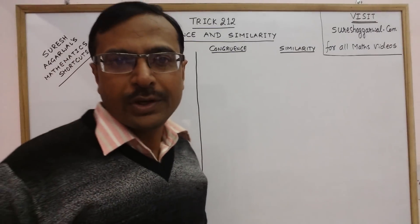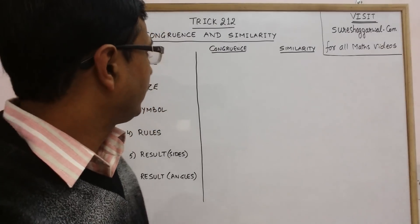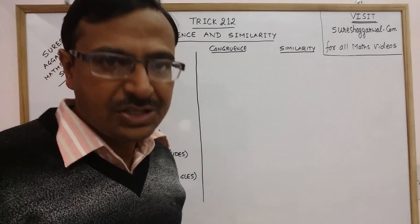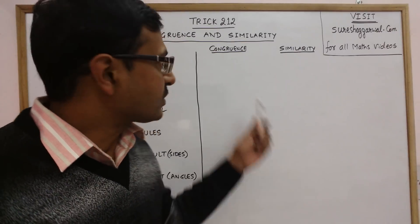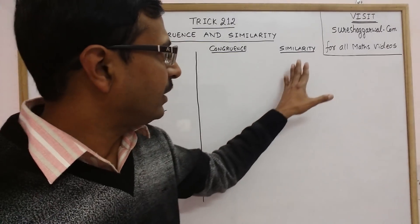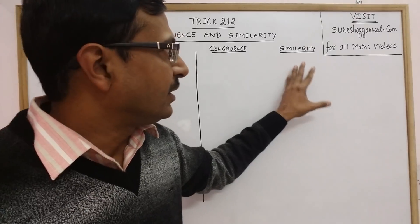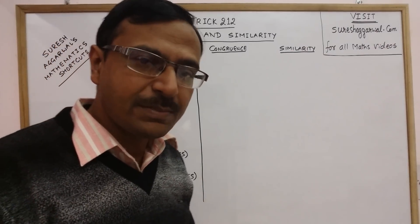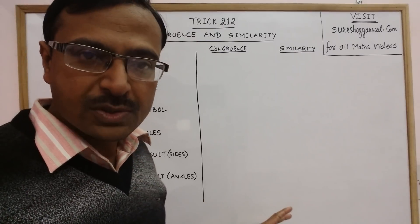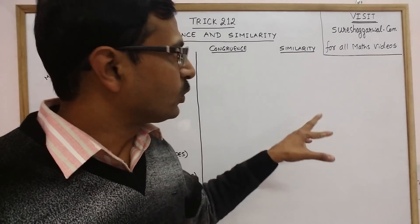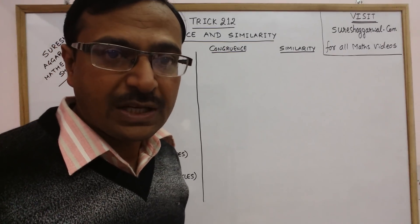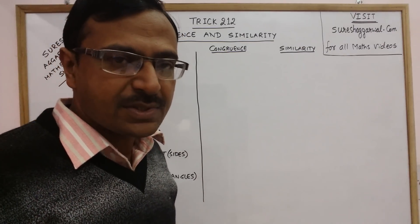Hello dear friends, in trick number 212, today I am going to tell you how congruent triangles and similar triangles differ with each other. Normally, congruence is taught at school level from class 8 onwards, and when students come to class 10th, they learn the concept of similarity. These two concepts are often confused because similar rules of congruency are also used in similarity. This video will help in understanding the difference between these two important concepts of geometry.